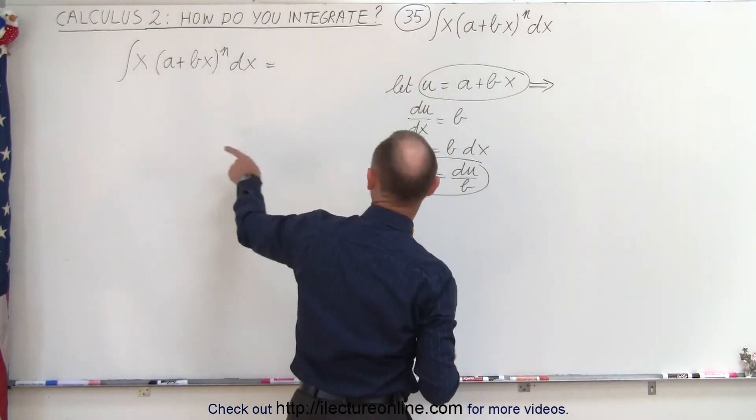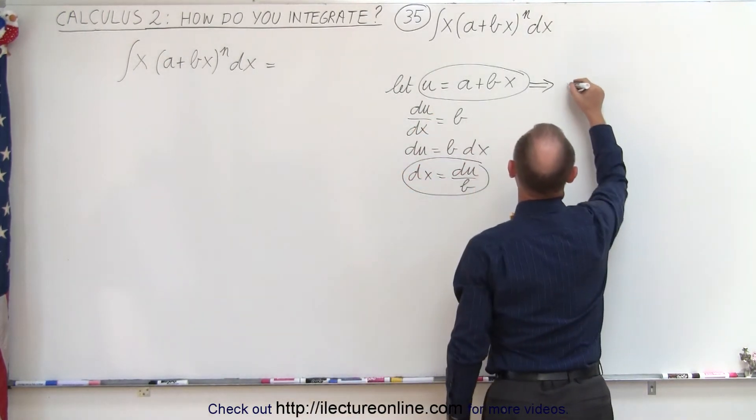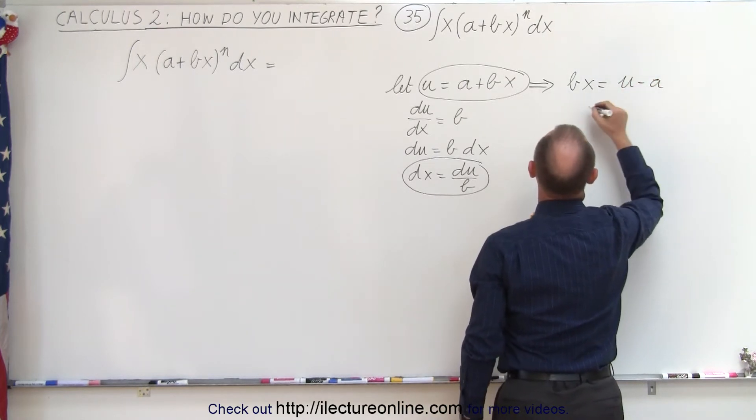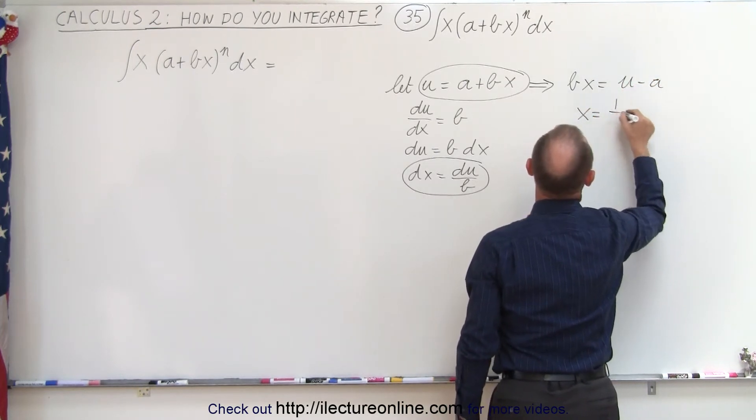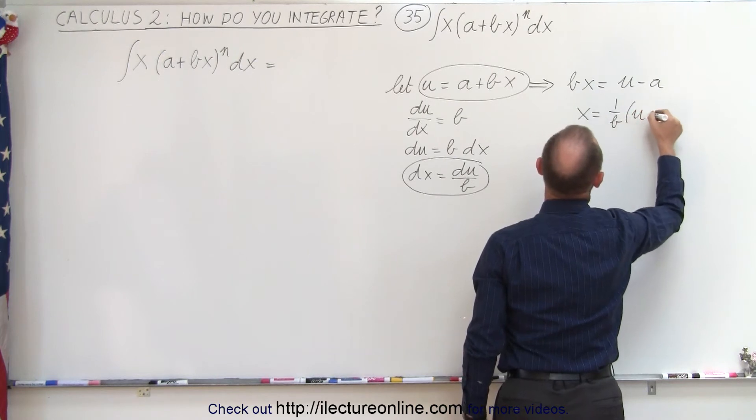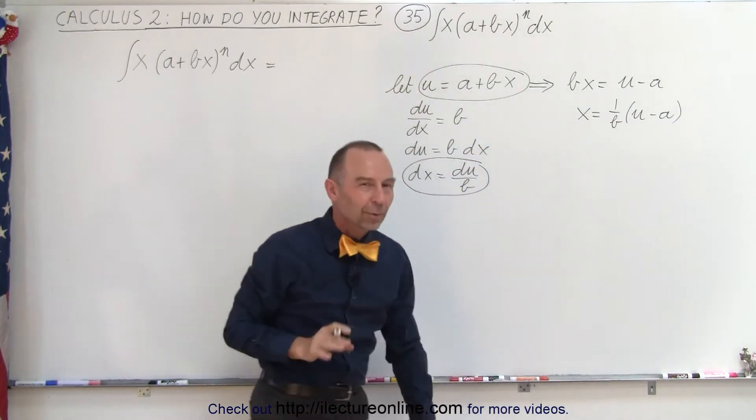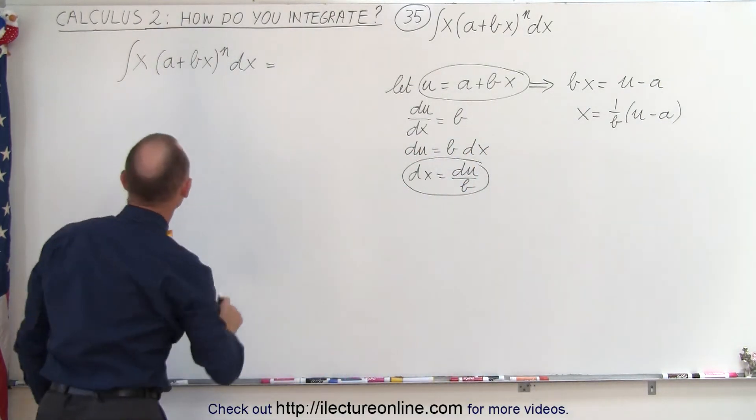We're going to take this and solve for x. So we have bx equals u minus a, or x equals 1/b times (u - a). If we substitute this in the integral as well, we might end up with something we can actually integrate. So let's try.